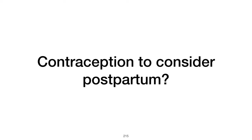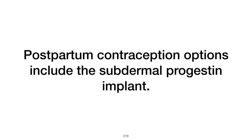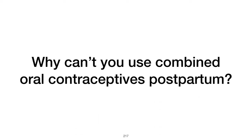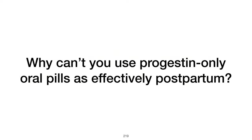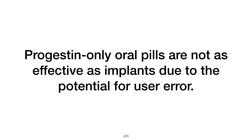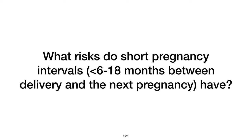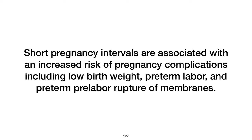What contraception is considered postpartum? Postpartum contraception options include subdermal progestin implants and intrauterine devices, which are highly effective and avoid the risks associated with estrogen-containing products shortly after childbirth. Combined OCPs are not recommended immediately postpartum due to the increased risk of thromboembolism associated with estrogen. Progestin-only oral pills are not as effective as implants due to the potential for user error. Short pregnancy intervals (less than 6 to 18 months between delivery and the next pregnancy) are associated with increased risk of low birth weight, preterm labor, and preterm pre-labor rupture of membranes.